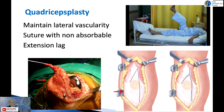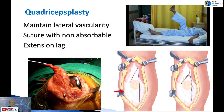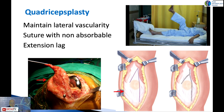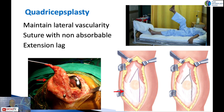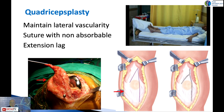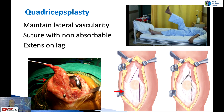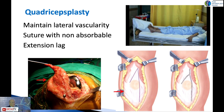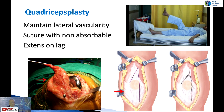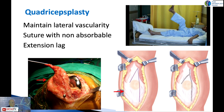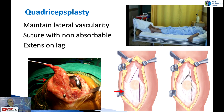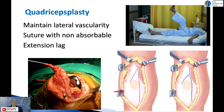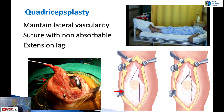A quadricepsplasty was used many years ago to regain length, and it's a great way to get your length back. However, as you can see, it leaves the patient with an extension lag, which is why we don't do it nowadays. But if you do choose to do it, suture it with nylon rather than vicryl, and you have to protect the patient post-operatively.